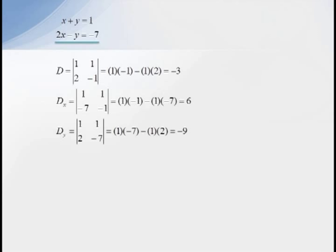To compute DX, we replace the column with the coefficients of X with our constants 1 and negative 7. So we get the determinant of the matrix 1, 1, negative 7, negative 1, which is negative 1 plus 7, which equals 6. Likewise, if we replace the second column with our constants, then DY equals the determinant of 1, 1, 2, negative 7, which equals negative 7 minus 2, or negative 9.